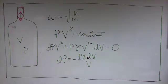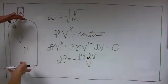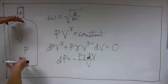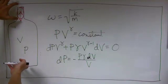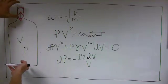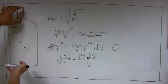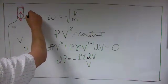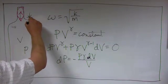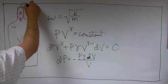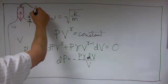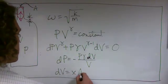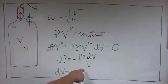Now, dV is the change in the volume from the equilibrium value. That change is simply how much the movement of this parcel of air has compressed this. If this moves distance x and the cross-section is a, then the change in volume is xa.